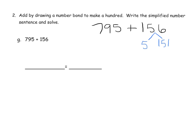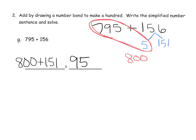So let's decompose this guy to 5 plus 151. And sure enough, that's still our 156. But now we can add these two guys together. 795 plus 5. That gives us 800. There's our milestone number. And our simplified expression would be 800 plus 151. And that equals 951.